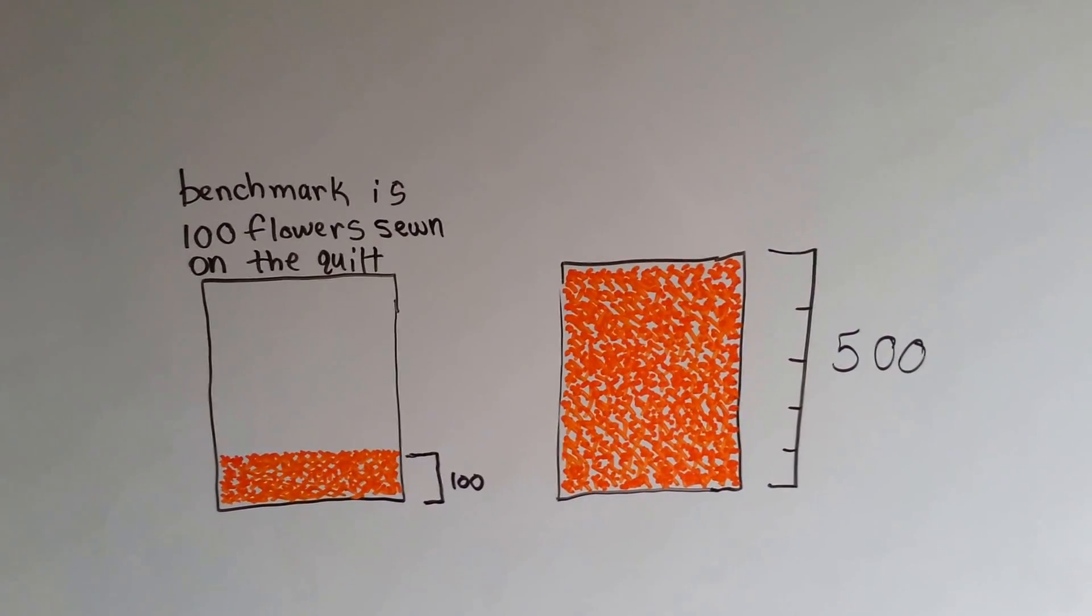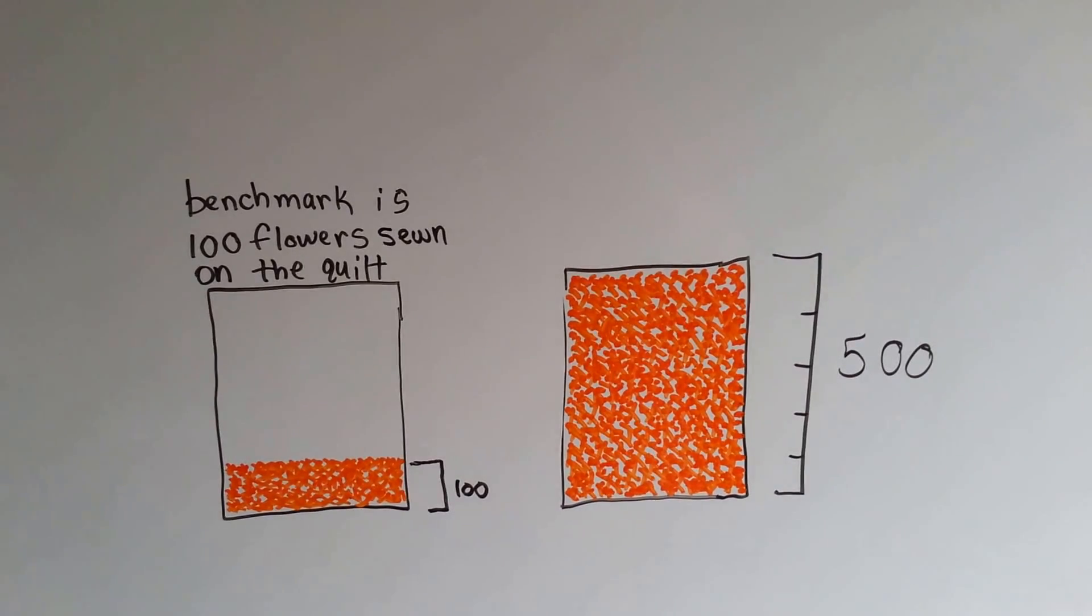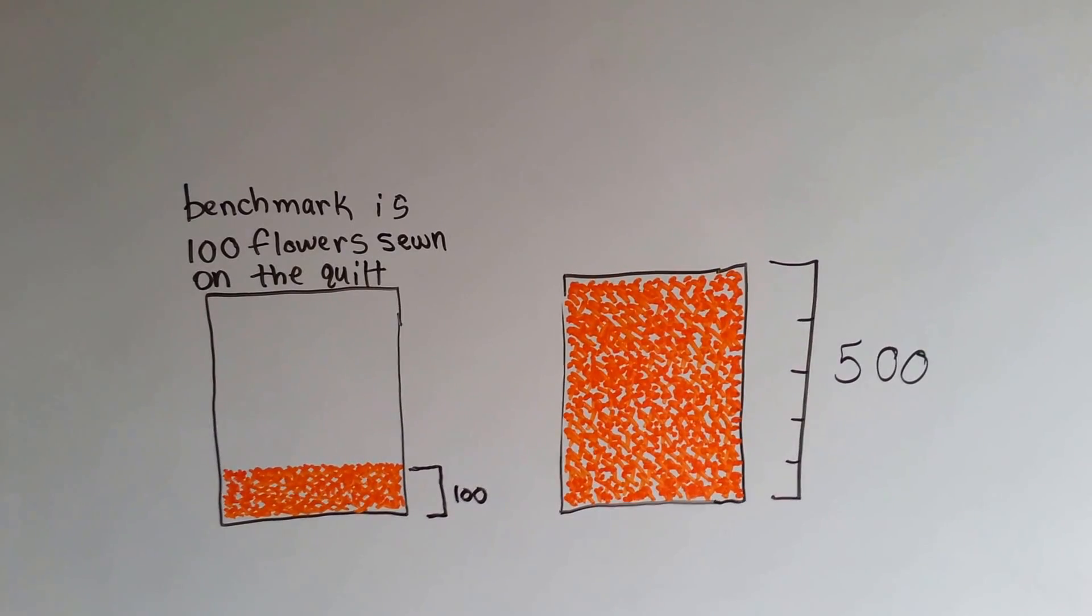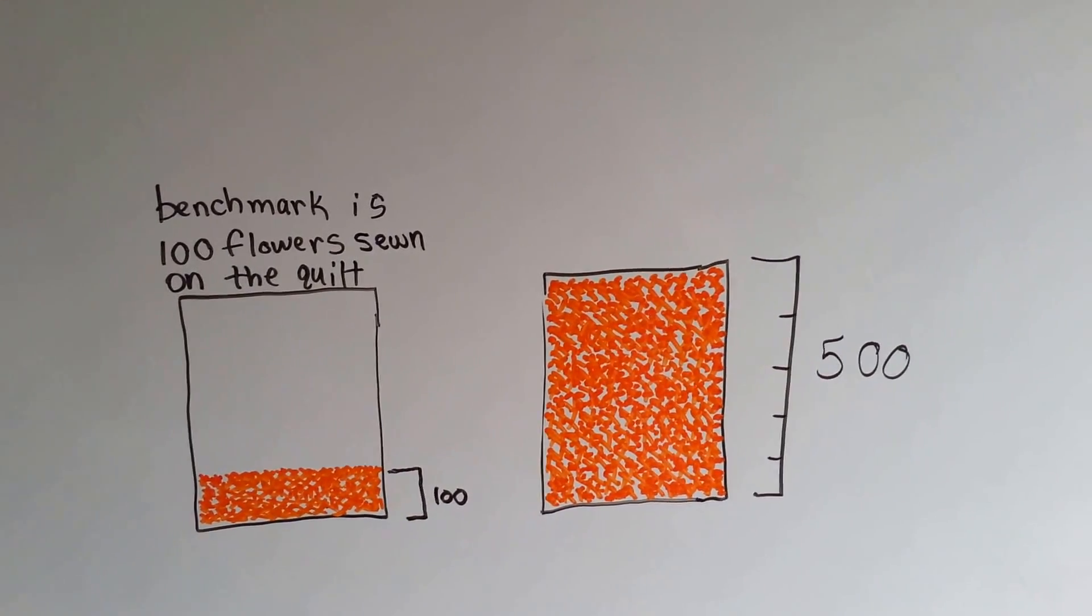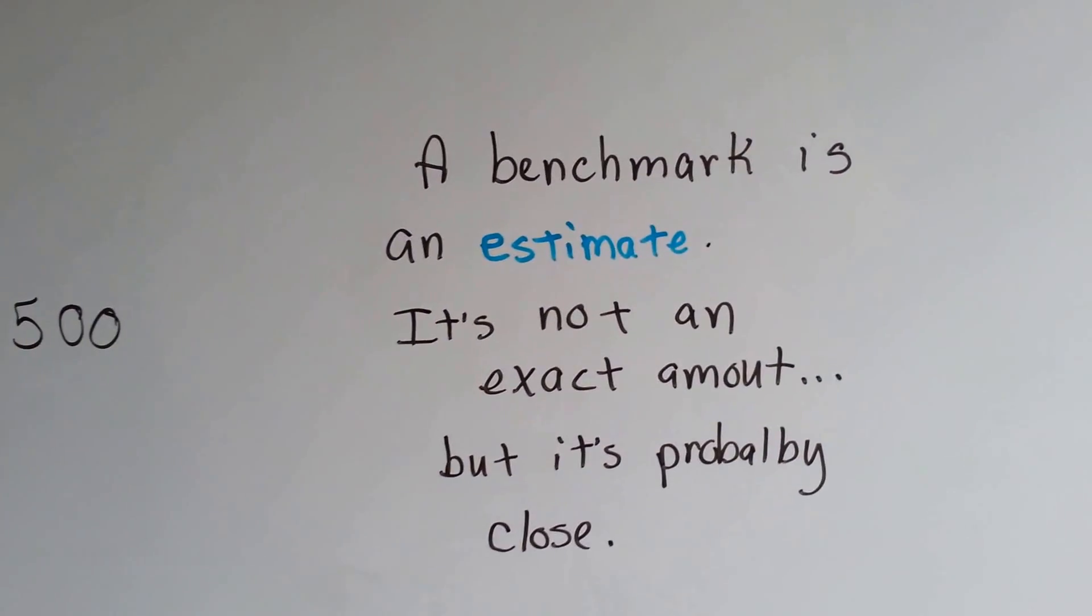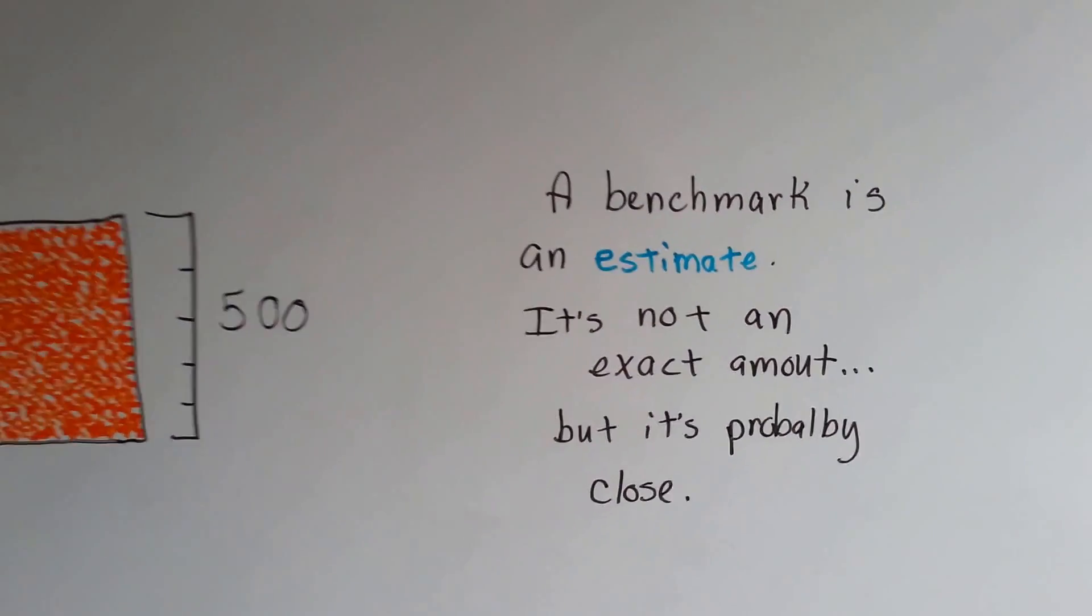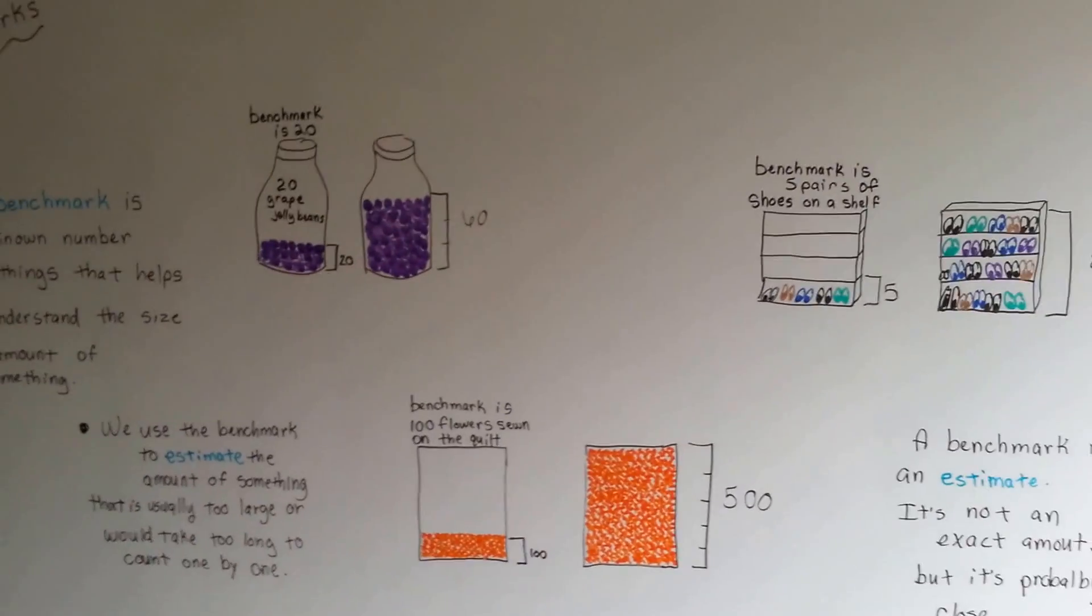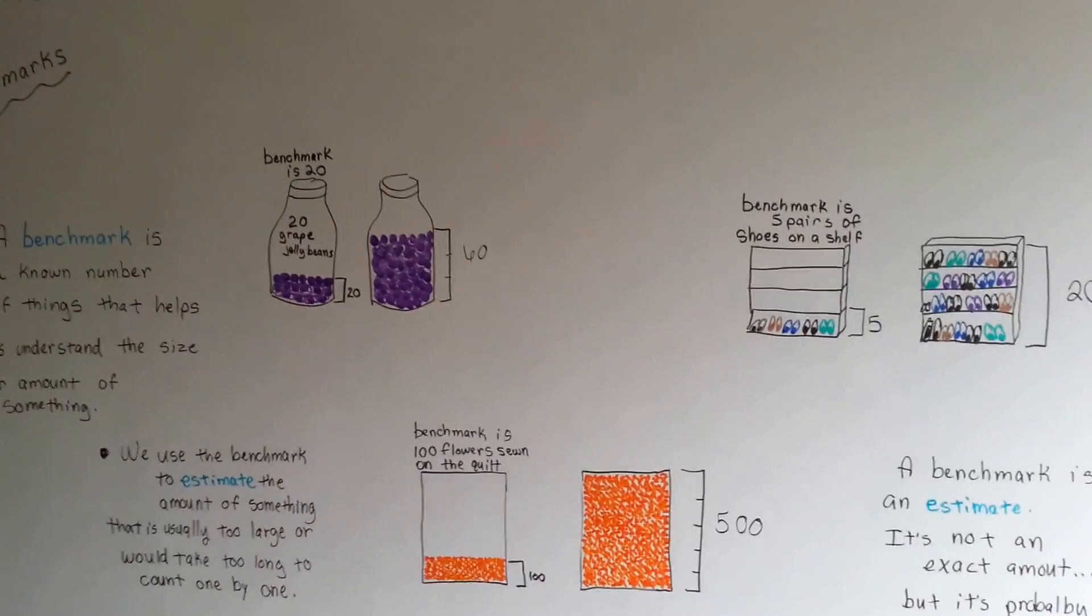You'd have to count them one by one and that would take a long time. So it's a lot easier to just use a benchmark and say there is approximately 500 flowers on the quilt. Remember, a benchmark is an estimate. It's not an exact amount, but it's probably close. And it's a lot easier to count large items with a benchmark than it is to do one by one.